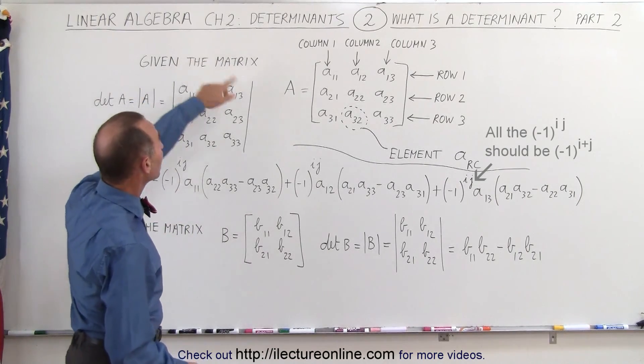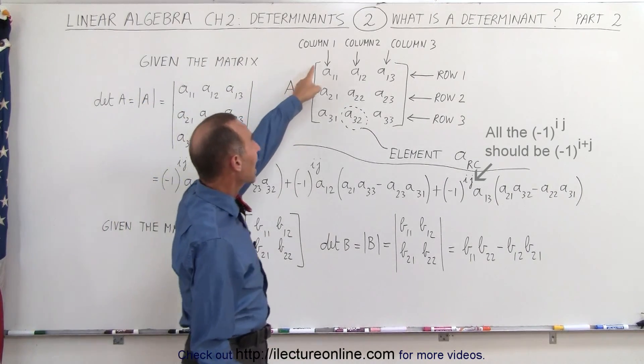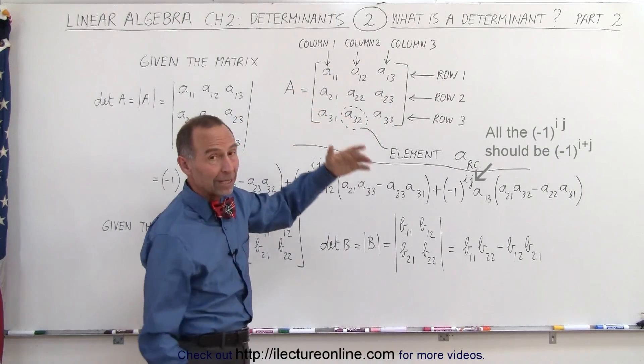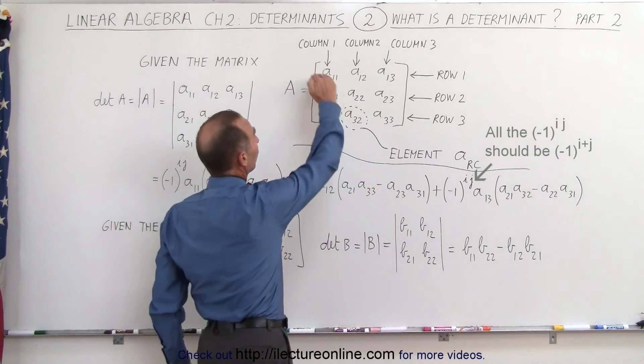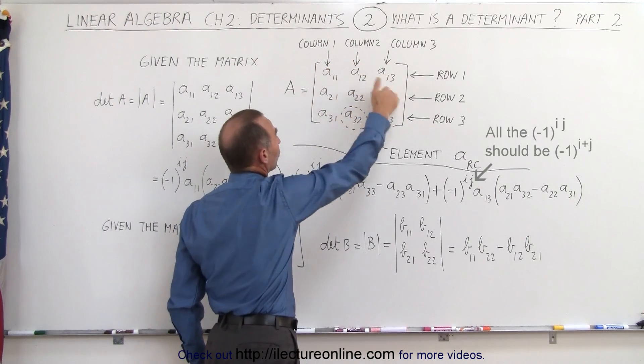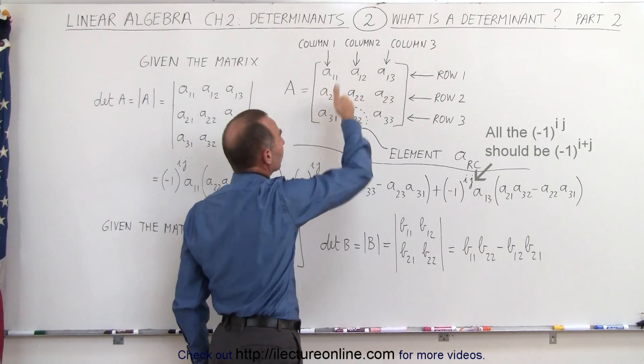Let's say we have a matrix, given the matrix A, and here we have a matrix that's 3 by 3, and we have therefore 3 rows and 3 columns, so the rows are horizontal and the columns are vertical.